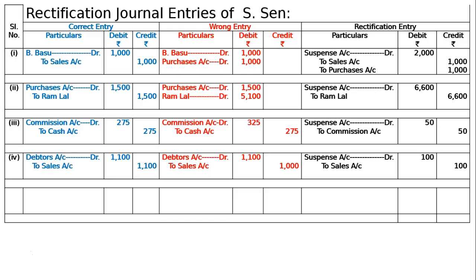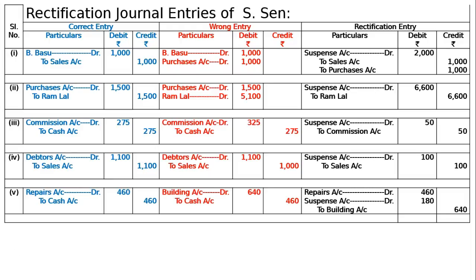Fifth entry: Rs.460 paid for building repairs was by mistake debited to building account as Rs.640. The correct entry is repairs to cash Rs.460. The wrong entry was building account debited Rs.640 to cash account Rs.460. To rectify: repairs account debited Rs.460 and building account credited Rs.640. The difference Rs.640 minus Rs.460 equals Rs.180 is debited to suspense account. Narration: repairs to building Rs.460 debited to building account by Rs.640 — now rectified.